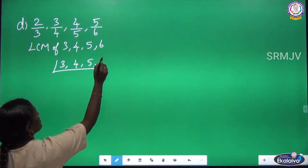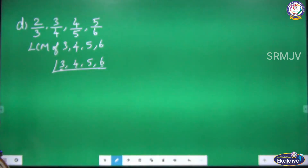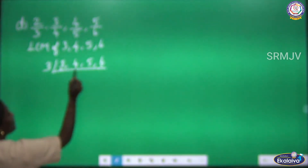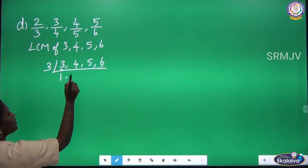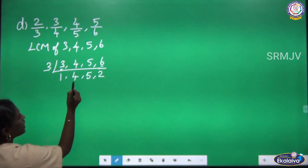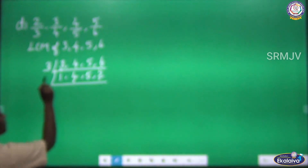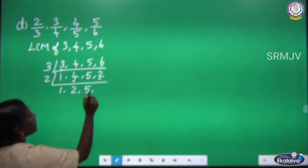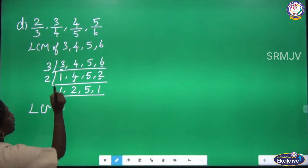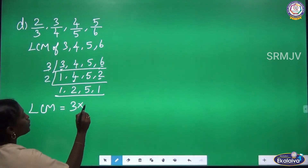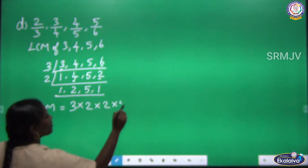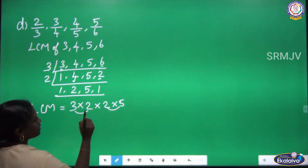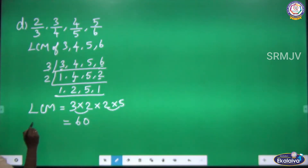Using L division: 3, 4, 5, 6 — 3 and 6 are divisible by 3. So 3 ÷ 3 = 1, 4 stays as 4, 5 stays as 5, 6 ÷ 3 = 2. Now 4 and 2 are divisible by 2: 4 ÷ 2 = 2, 5 stays, 2 ÷ 2 = 1. We now have prime numbers in the last row. LCM = 3 × 2 × 2 × 5: so 3 twos are 6, 6 twos are 12 — wait, 6 × 10 = 60. The LCM is 60.